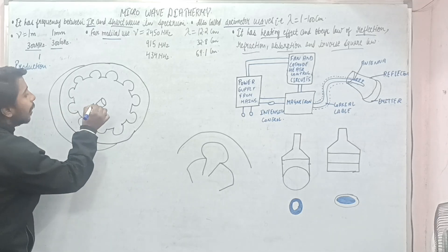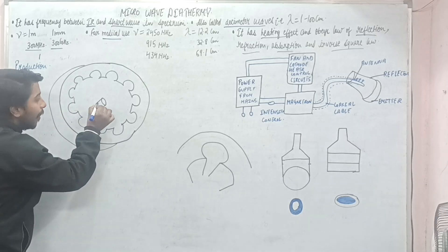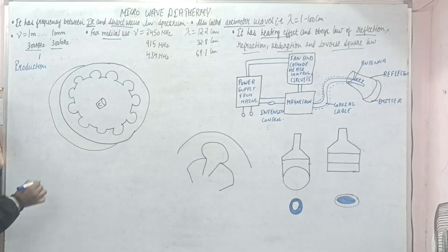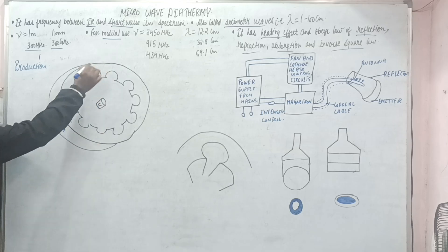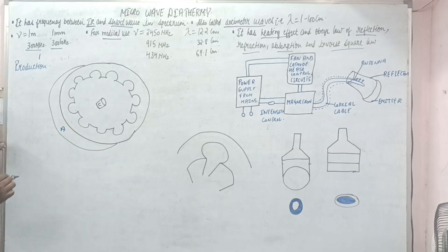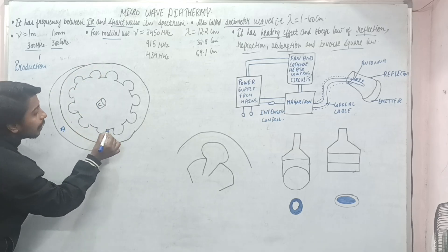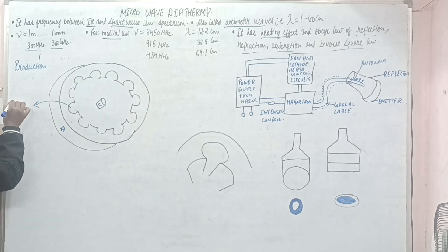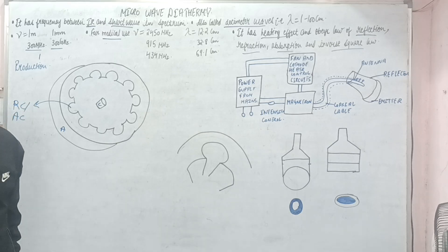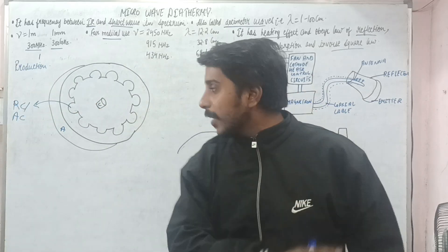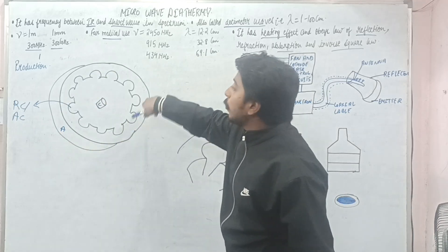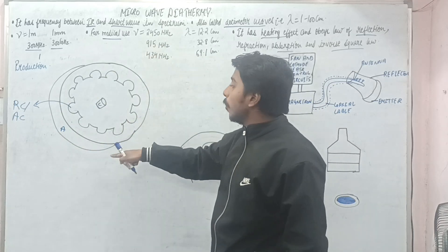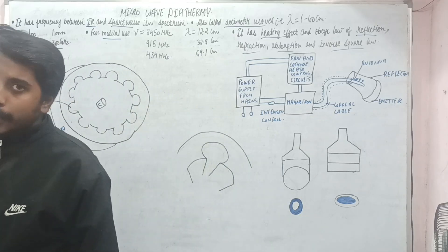The magnetron is an electrical device which has a cathode and an anode. At the centre is the cathode, and at the outside is the anode. The anode has circular cavities, which are called the resonating cavities or anodal cavities. So at the centre is cathode, the outer circle is anode, and the anode has these cavities.